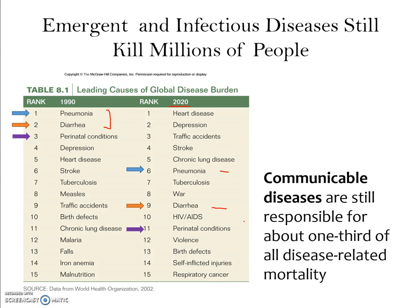Other conditions like perinatal conditions — affecting either the mother or offspring right after birth — have also decreased. We also see environmental diseases not caused by pathogens per se, but by lifestyle or other aspects of the environment, like depression and heart disease. These have moved up considerably in rank over the last 30 years in this projection.